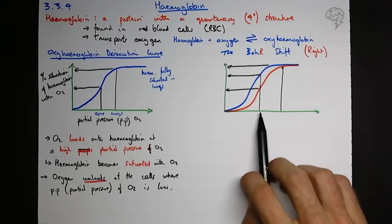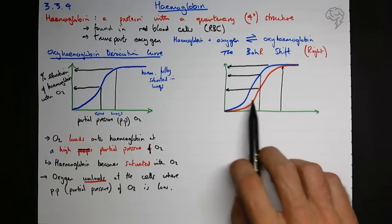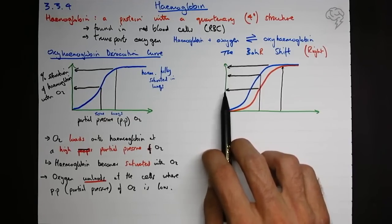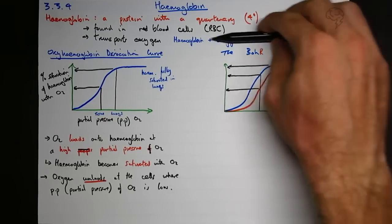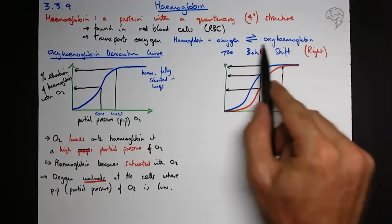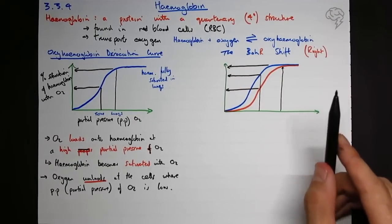For the same drop in partial pressure at the tissues, we actually means the hemoglobin is less saturated with oxygen when it leaves. Which means it's done more of this. It's released more oxygen and there's less oxyhemoglobin.